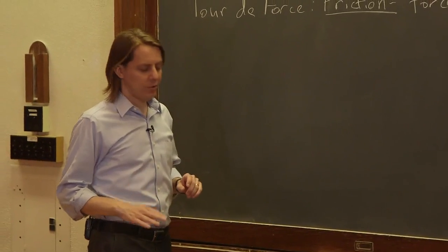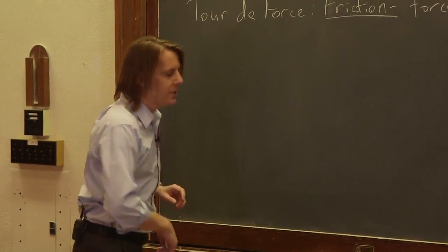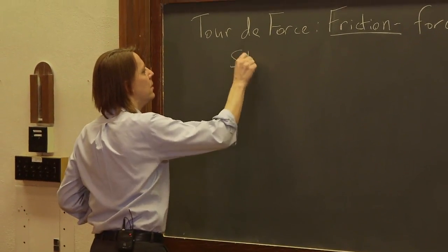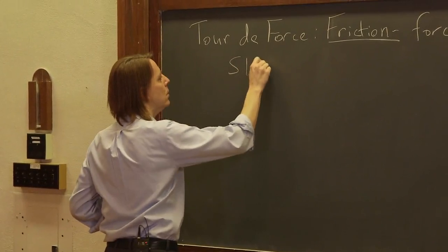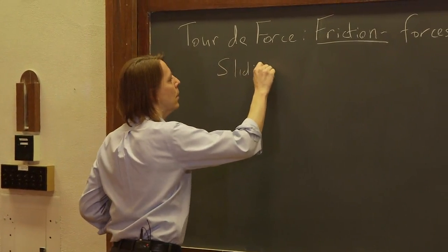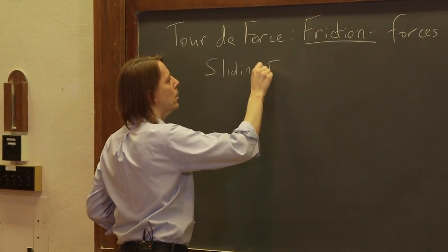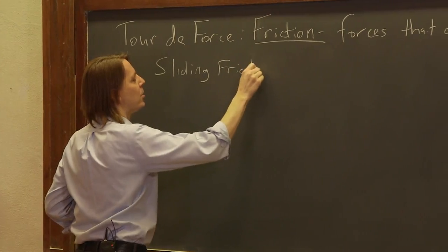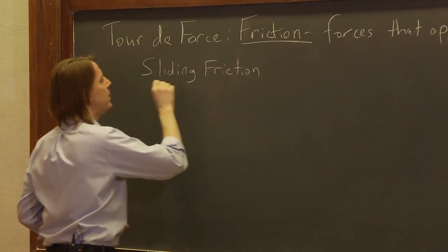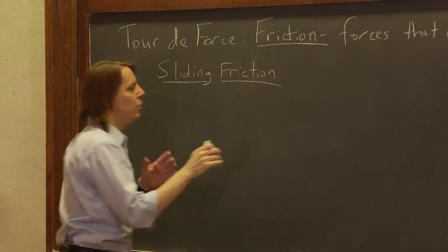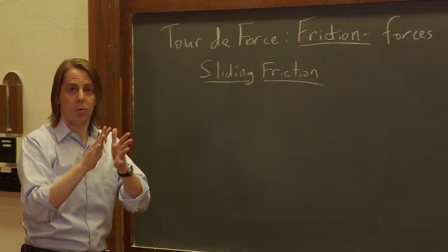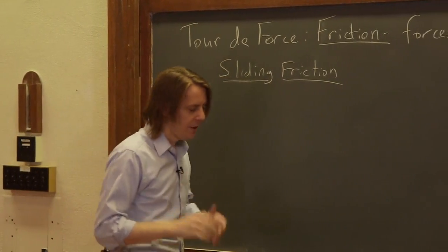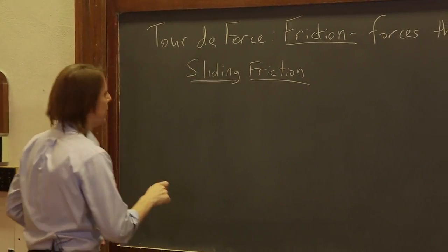We're going to look at two kinds. The first is sliding friction, or it might be called kinetic friction. This is the force you get when the two objects are really moving — when one is really sliding against the other.